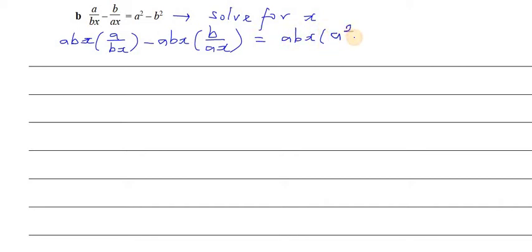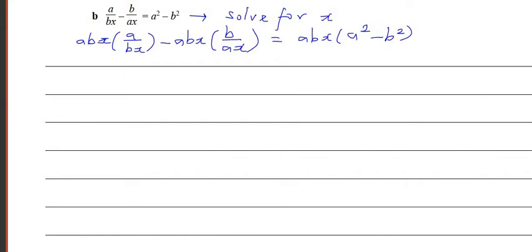The right-hand side is abx times the whole expression (a² - b²). Now the b and x cancel here, and a and x cancel here, so we're left with a times a, which is a², minus b times b, which is b².